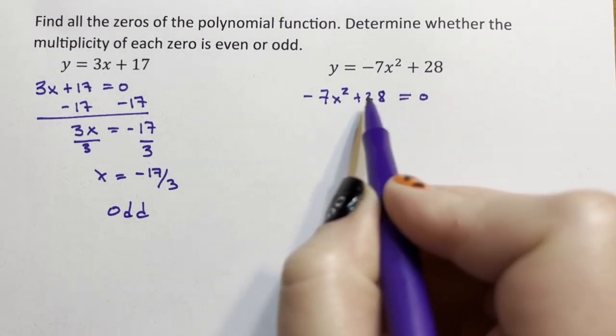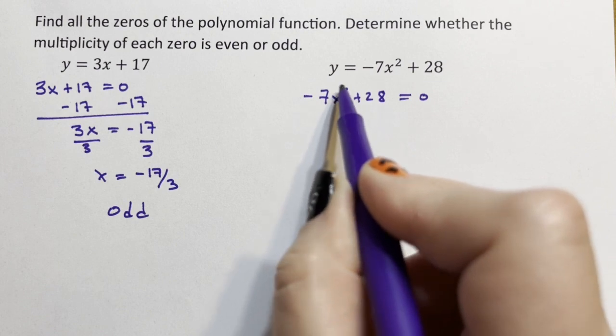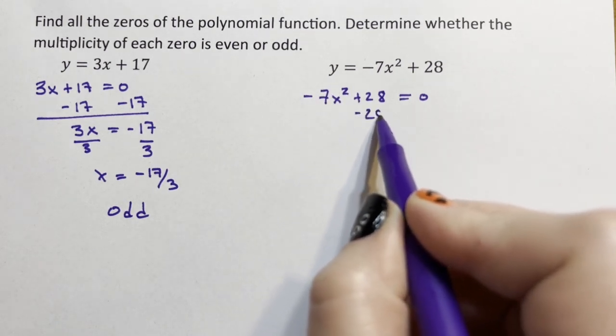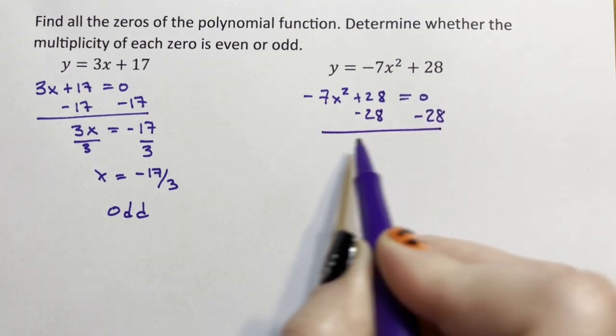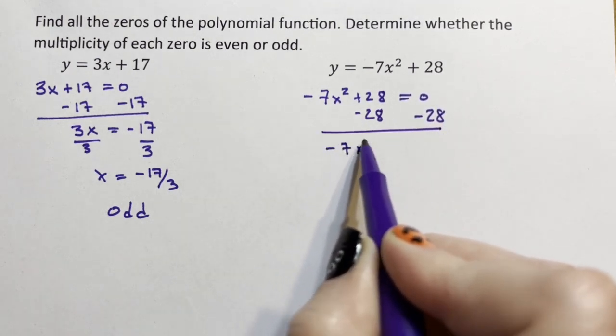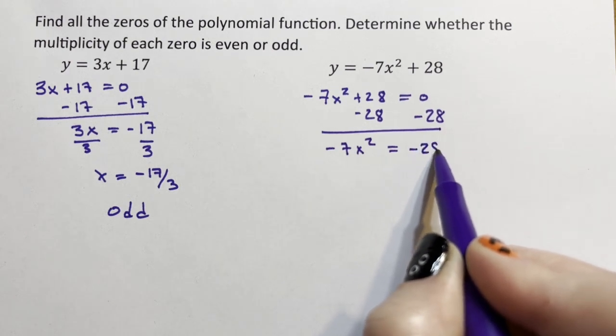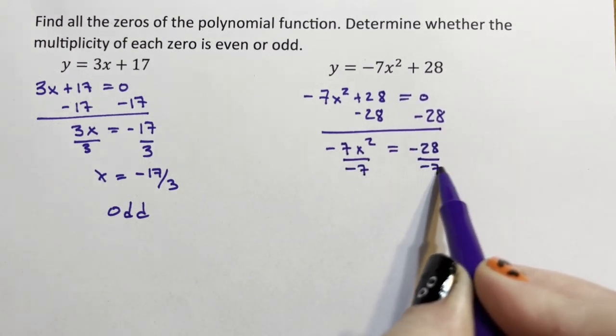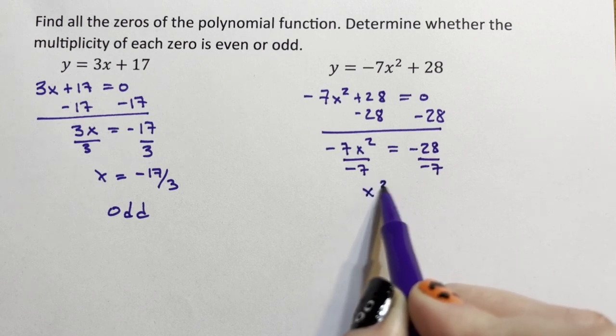We could factor. It is easier if the variable is only in one term to isolate and solve, so I'm going to subtract 28 from both sides. Negative 7x squared equals negative 28. Divide by negative 7, and x squared is equal to 4.